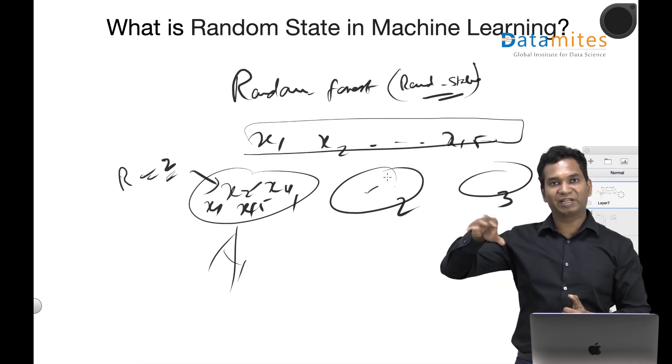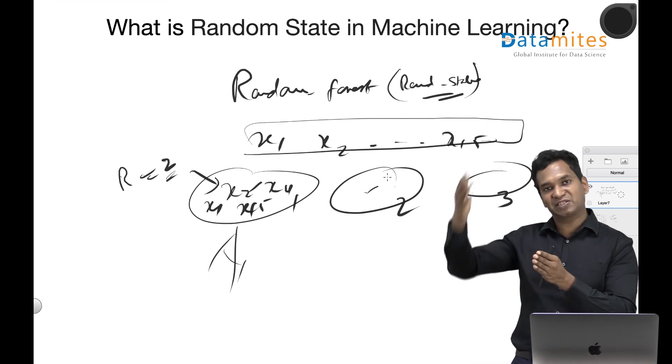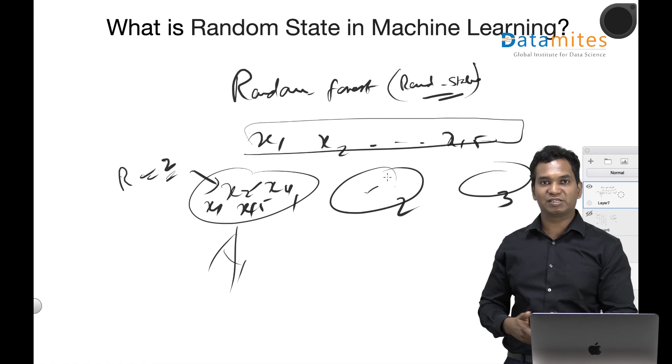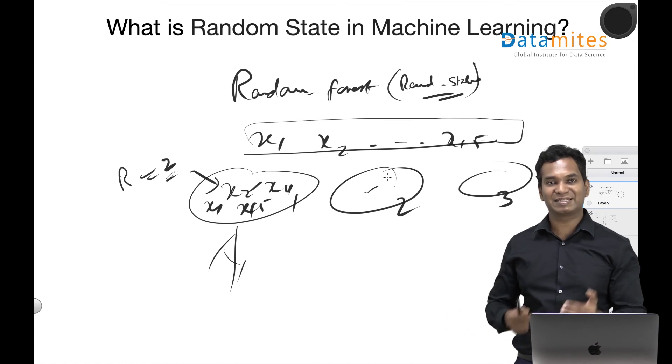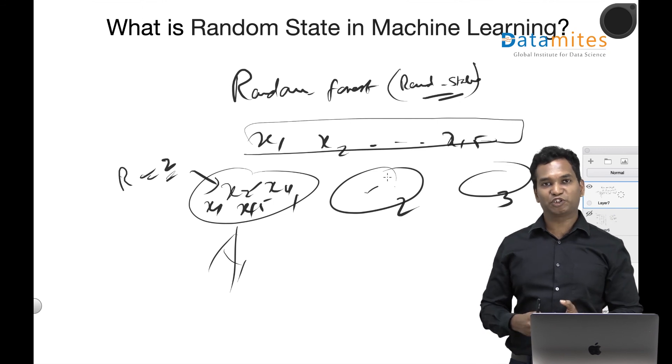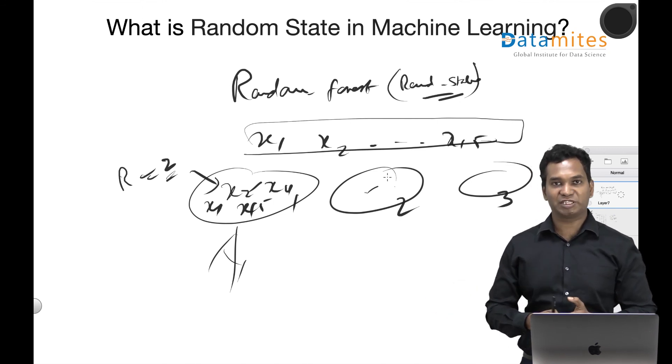Thereby there is no variation happening in it. When you run the algorithm again, the same kind of state has been applied so that you know for sure that the deviations of your accuracy are not coming from the random states.